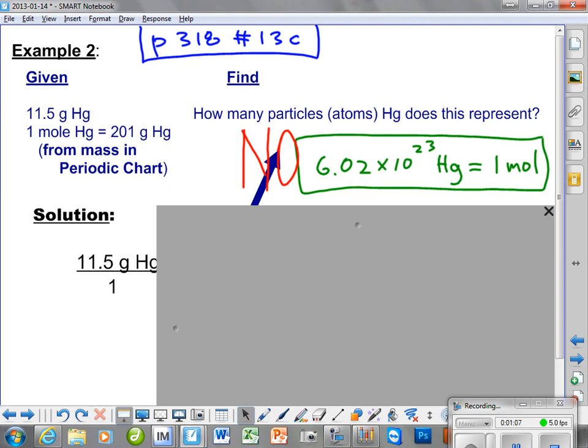So let's look and see what our solution is going to look like. The first thing is going to be that we take the given which is 11.5 grams of mercury right here and we're going to put that guy over 1.